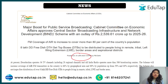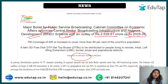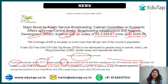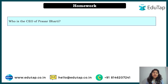The Cabinet Committee on Economic Affairs approved the Central Sector Broadcasting Infrastructure and Network Development scheme with an outlay allocated up to 2025-26. An additional point from the news: at present, Doordarshan operates 36 TV channels including 28 regional channels, and All India Radio operates more than 500 broadcasting centers across India.